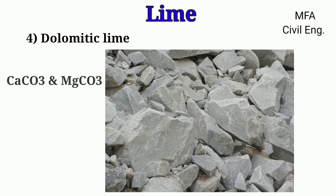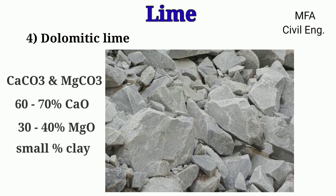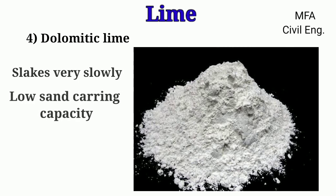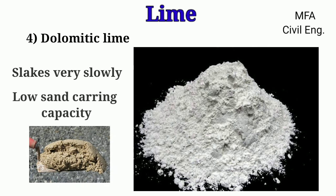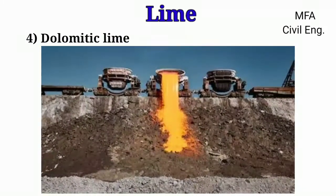Dolomite lime is the equimolecular mixture of calcium carbonate and magnesium carbonate. It is obtained by heating dolomite. It contains 60 to 70 percent calcium oxide, 30 to 40 percent magnesium oxide, and a very small percentage of clay. Its properties include: it is expensive, slakes very slowly, has a low sand carrying capacity, produces a comparatively strong mortar which is plastic, works easily and smoothly under the trowel, and sets to a hard mass. It is used as a flux in metallurgy and for preparing special slag.